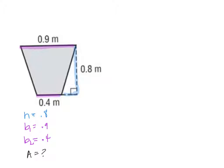So by now you should know, the first thing we're going to do is we're going to write the formula. So the area of a trapezoid, the formula for it, is one half the height times base one plus base two. So we substitute in what we know. My height is point eight. My base one is point nine, and I'm going to add to it point four.